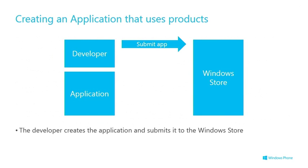I'm going to run through the whole end-to-end flow of what happens relating to in-app purchase — how you set this up, the role of Microsoft, and the role of you and what the application does. First of all, you, the developer, create your app in just the same way as you always have done, and submit it for verification and publishing to the Windows Phone Store using your account in the Dev Center.